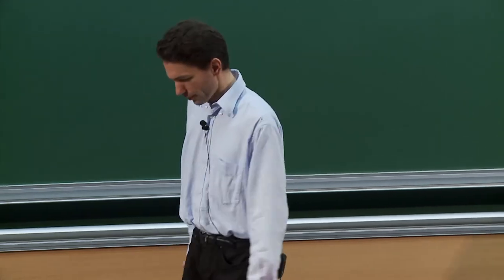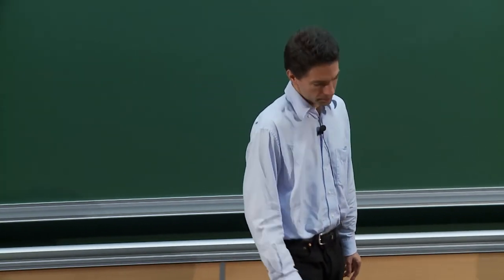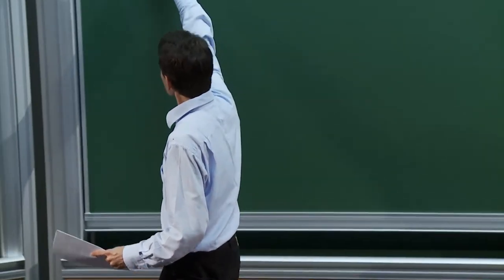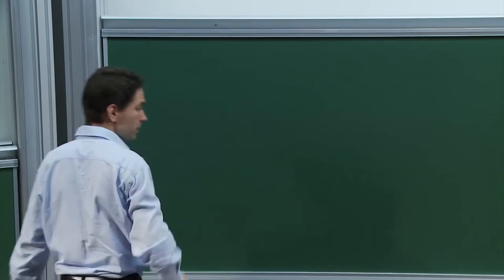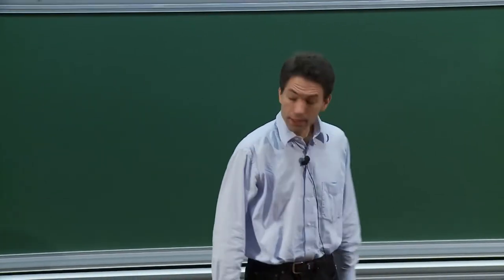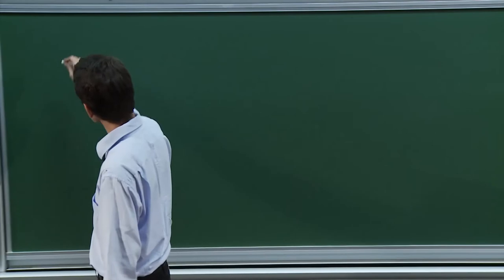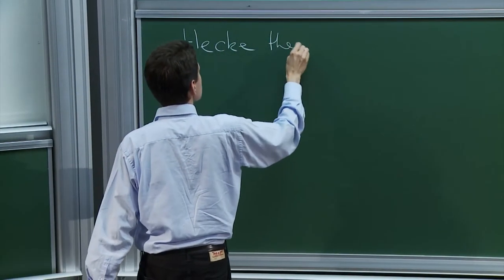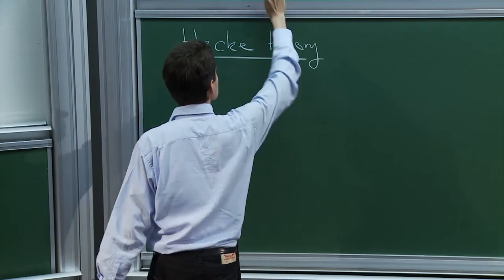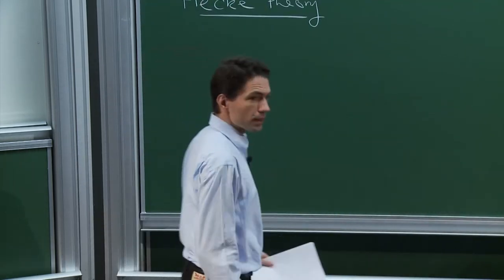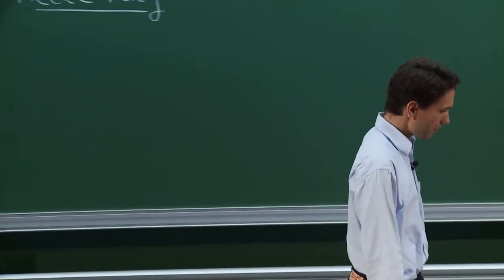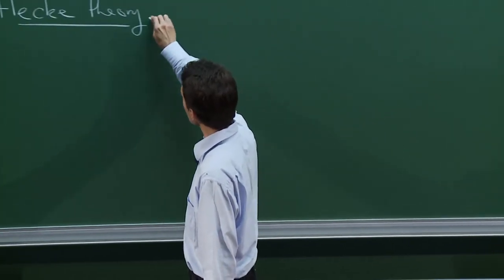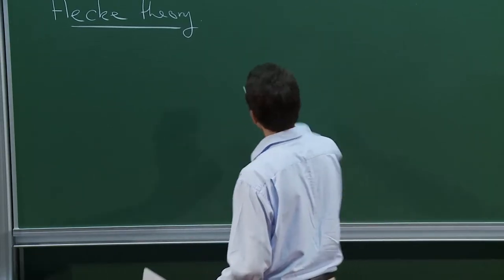We were in the middle of the discussion of Siegel modular forms. What I would like to discuss briefly at this point is Hecke theory for Siegel modular forms, only in the unramified case. The ramified case — I don't know if this has ever been worked out, but it's certainly very complicated.